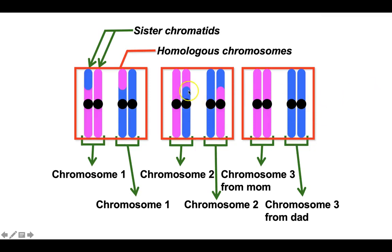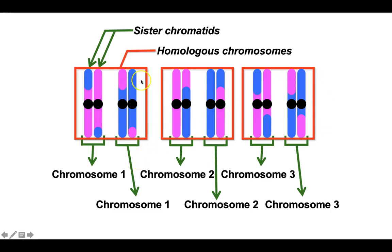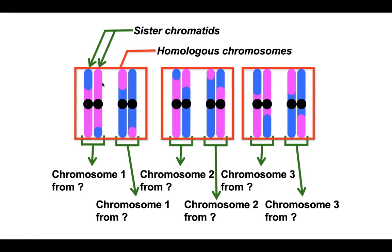It happened again — another piece was swapped between chromosome two from mom and chromosome two from dad. And another piece was swapped between chromosome three from mom and chromosome three from dad. This swapping keeps happening in many different places. What this means is that every individual sperm and egg cell that's eventually produced has these mosaic chromosomes because of crossing over.